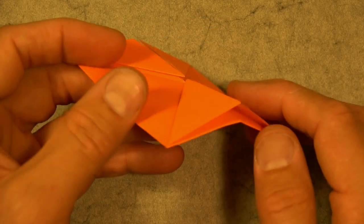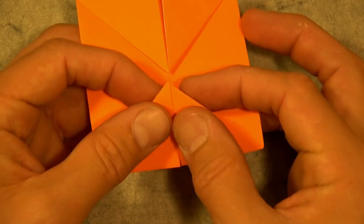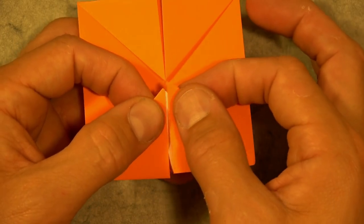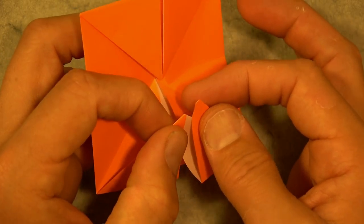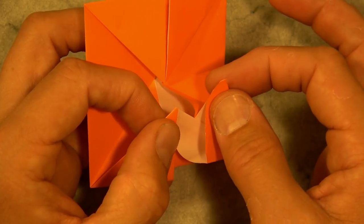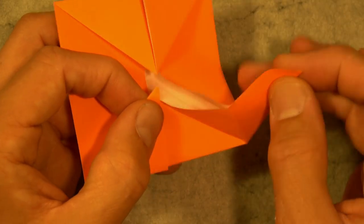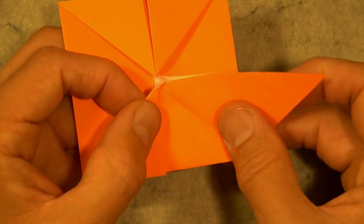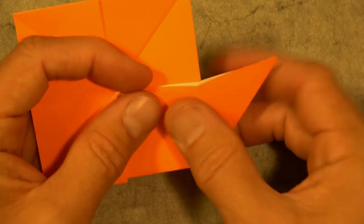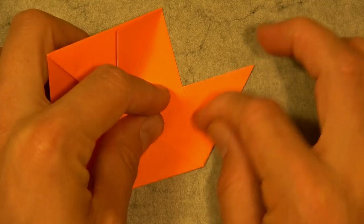Okay. So this is what it looks like. Now hold on to this flap and we're going to pull this layer out from here. Just pull it out and place it down here. Just pull it out as far as it can go. And flatten.